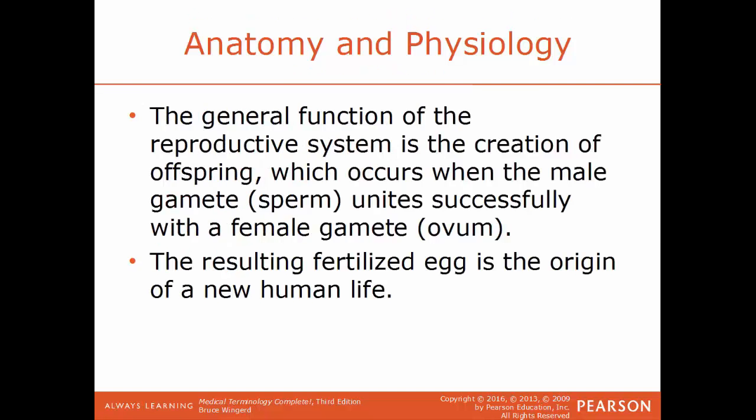The general function of the reproductive system is the creation of offspring. This occurs when you have the union of two gametes — another term for a sex cell. The gamete from a male would be a sperm cell, and the gamete from a female would be the egg, also known as the ovum. The sperm fertilizing the egg produces a fertilized egg, which is the origin of a new human life.